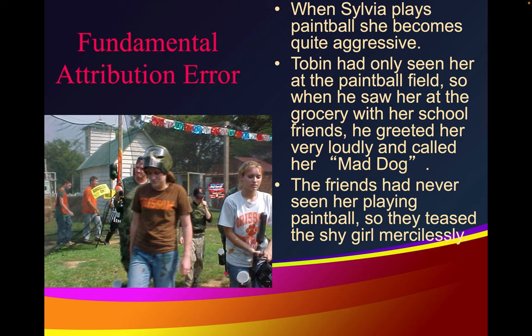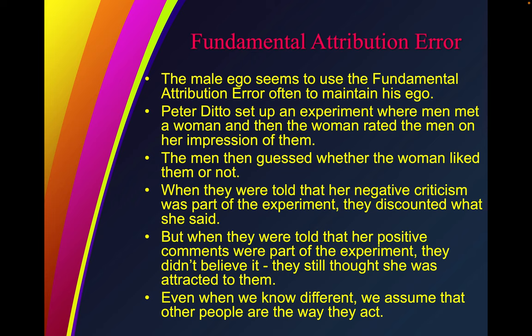When Sylvia plays paintball, she becomes quite aggressive. Tobin had only seen her at the paintball field, so when he saw her at the grocery store with her school friends, he greeted her very loudly and called her Mad Dog. The friends, who had never seen her play paintball, teased the shy girl mercilessly. In another example, Peter Ditto set up an experiment where men met a woman who then rated them on her impression. When told her negative criticism was part of the experiment, they discounted it. But when told her positive comments were part of the experiment, they still thought she was attracted to them.